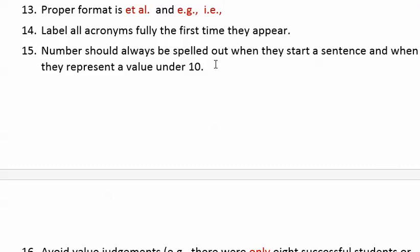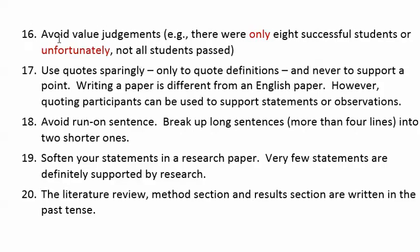Numbers should always be spelled out when they start a sentence or when they represent a value under 10. The key thing is it represents a value — for example, you could say 'grade 3' using the numeral because 3 is a label there. It's when the number refers to a quantity under 10 that you write it out in words. Number sixteen: avoid strong value judgments or strong statements. Instead of 'there were only 8 successful students' or 'unfortunately not all students passed,' just say 'there were 8 successful students out of 20' and 'not all students passed.'